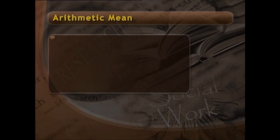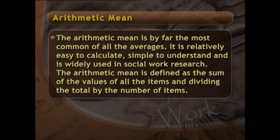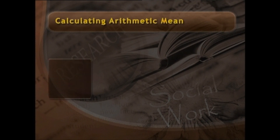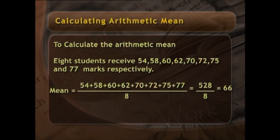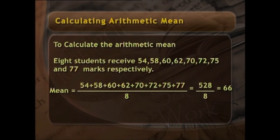Arithmetic mean is by far the most common of all the averages. It is relatively easy to calculate, simple to understand, and is widely used in social work research. The arithmetic mean is defined as the sum of the values of all the items divided by the number of items. For example, if eight students receive 54, 58, 60, 62, 70, 72, 75, and 77 marks respectively in an examination, then the mean = (54+58+60+62+70+72+75+77)/8 = 528/8 = 66.